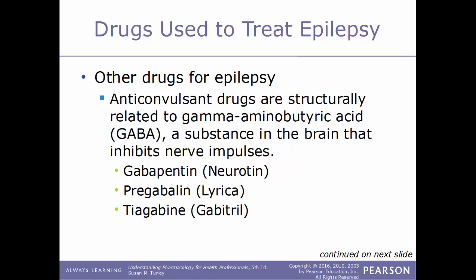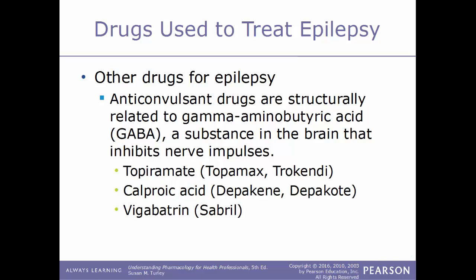Other drugs used to treat epilepsy are anticonvulsant drugs structurally related to GABA — gamma-aminobutyric acid — a substance in the brain that inhibits nerve impulses. Examples include gabapentin (Neurontin), pregabalin (Lyrica), tiagabine (Gabitril), topiramate (Topamax/Trokendi), valproic acid (Depakote/Depakene), and vigabatrin (Sabril).